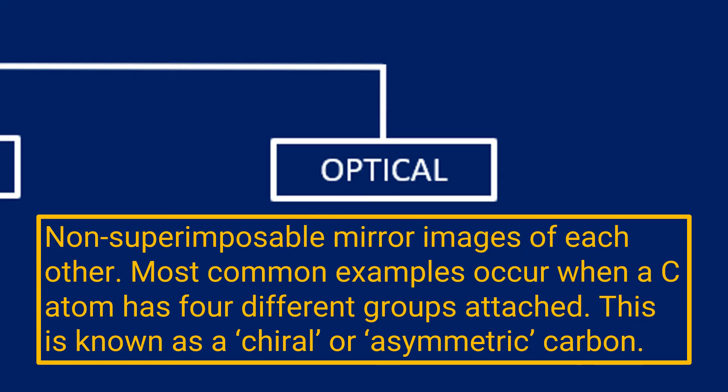Okay, the final type of stereoisomer is the optical isomers, and this is identified or defined as non-superimposable mirror images of each other. They most commonly occur when a carbon atom has four different groups attached, and we call this a chiral carbon or an asymmetric carbon.